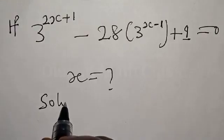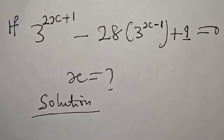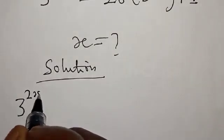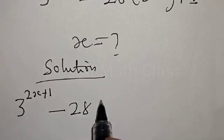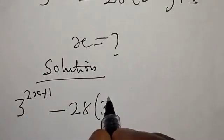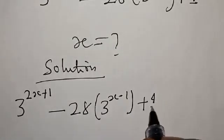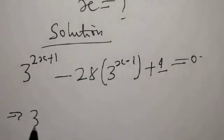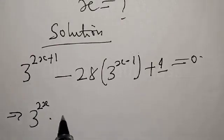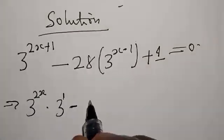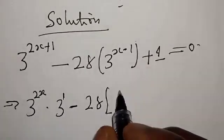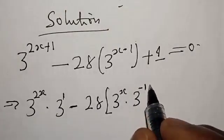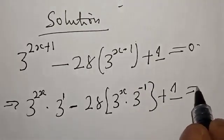Solution. We have 3 raised to the power 2x plus 1, minus 28 into 3 raised to the power x minus 1, plus 1, is equal to 0. This implies that we have 3 raised to the power 2x multiplied by 3 raised to the power 1, minus 28 into 3 raised to the power x multiplied by 3 raised to the power minus 1, plus 1, is equal to 0.